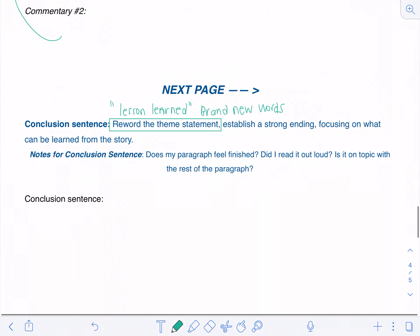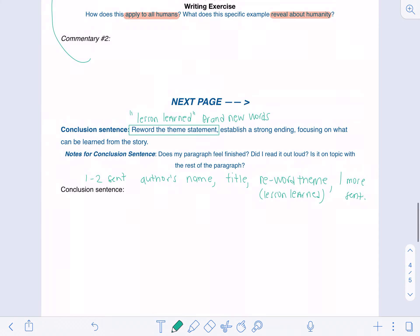A lot of times students like to use a thesaurus here, and then you want to add a strong ending focusing on what could be learned from the story. So I don't mind if your conclusion is one to two sentences long. Here you want to include the author's name, the title, a reworded theme or lesson learned, and then if you want to add one more sentence you could wrap it up, make it feel finished, and you can do that a little bit more creatively if you would like.